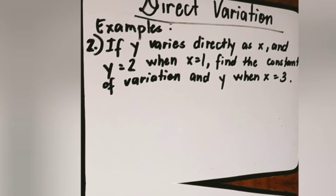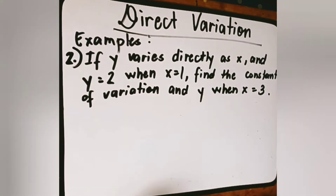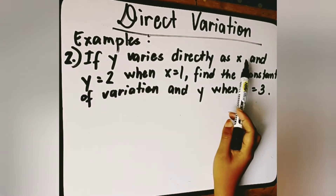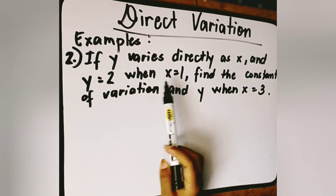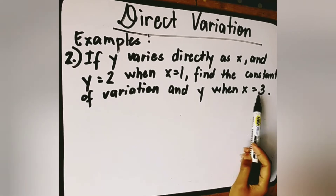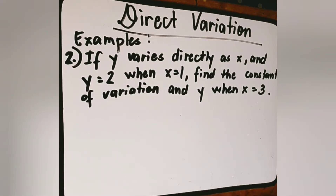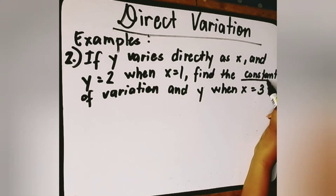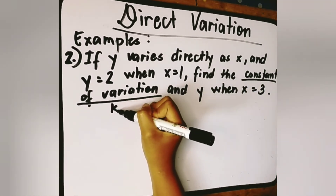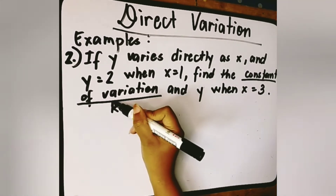Let's move on to example number two. If y varies directly as x and y is equal to 2 when x is equal to 1, find the constant of variation and y when x is 3. First, let us identify what we need to find: the constant of variation, which is k.